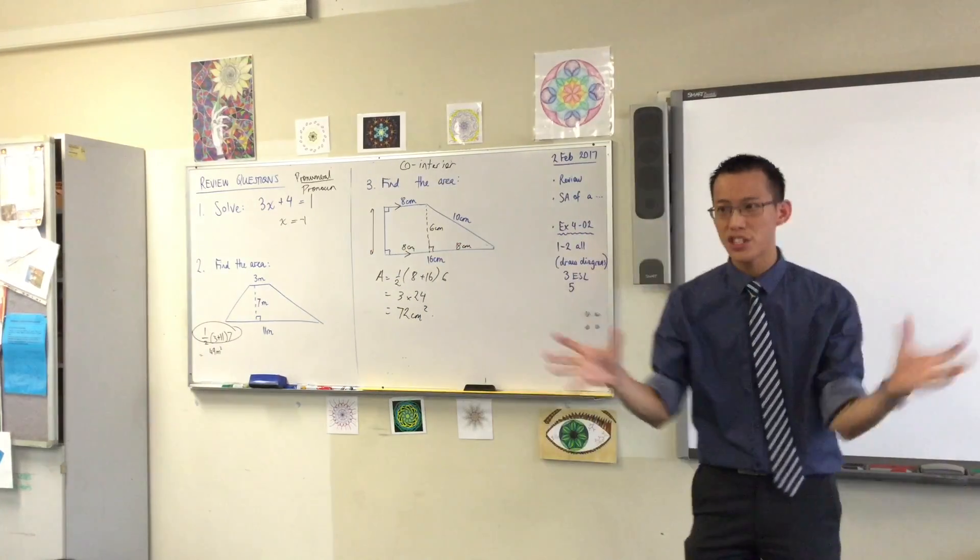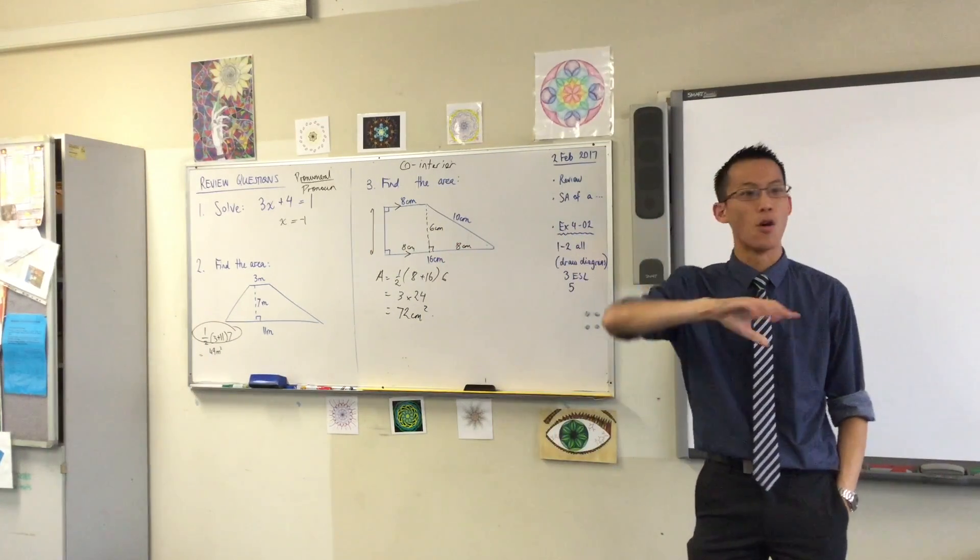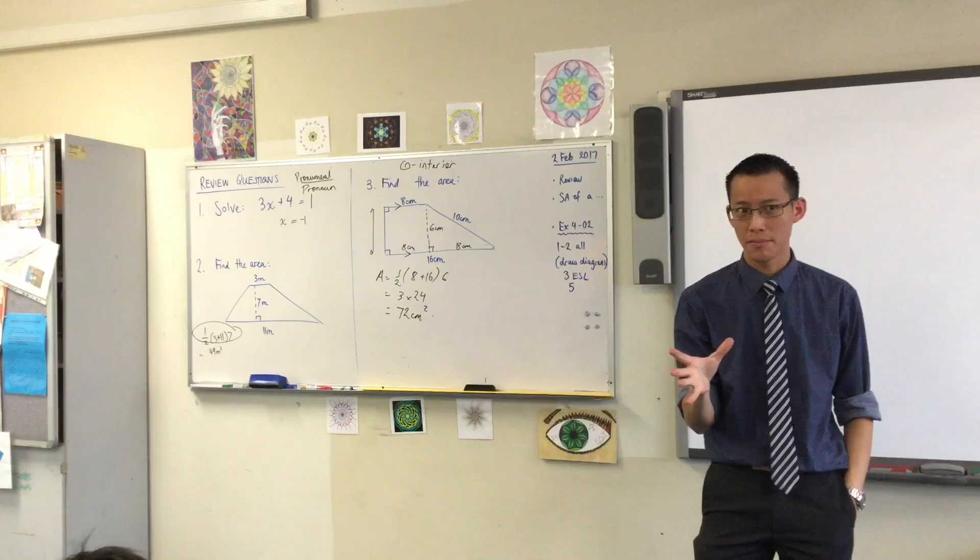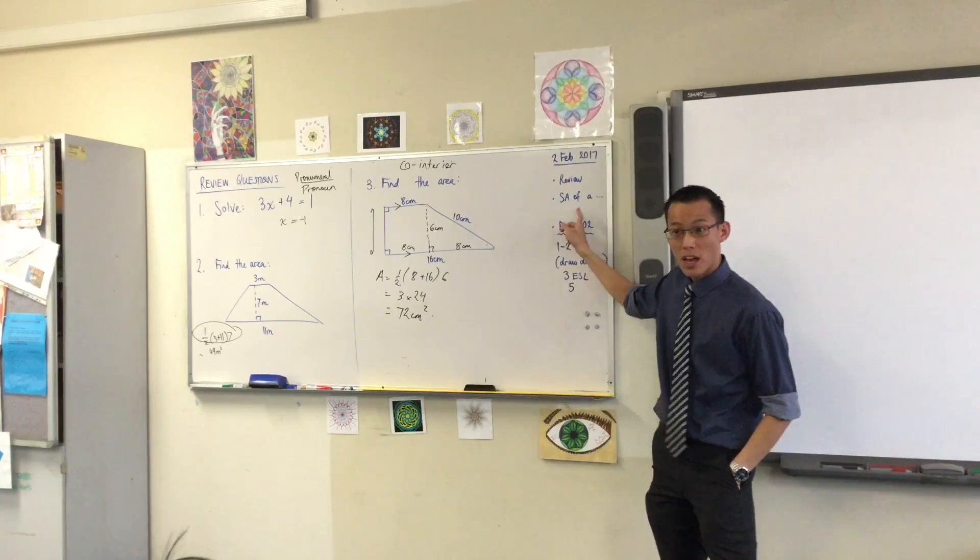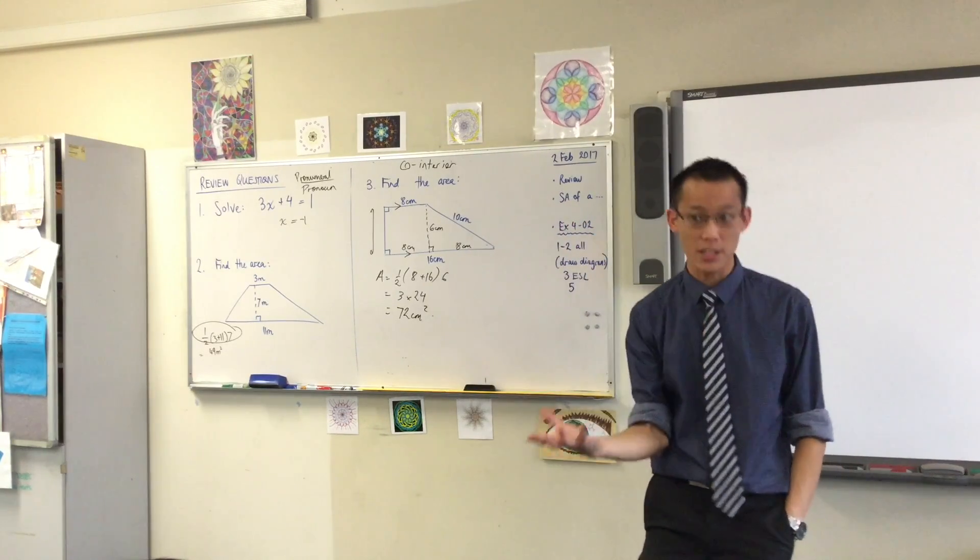What did we look at yesterday? We looked at a bunch of different shapes, but we wanted to find one thing for all of the shapes. What was it? Surface area. The shapes that we were particularly looking at, they were all prisms.